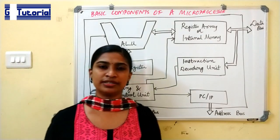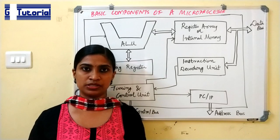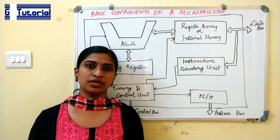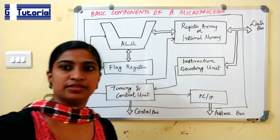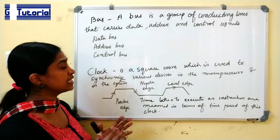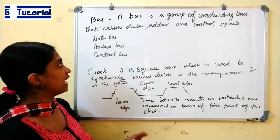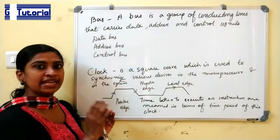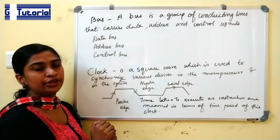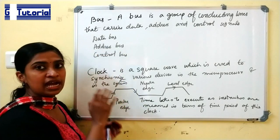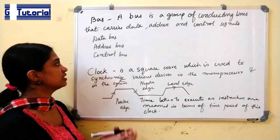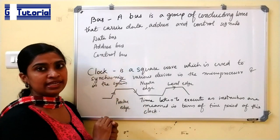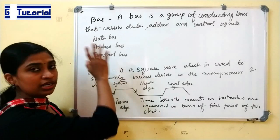Now let us see some important terms used in microprocessor study. A bus is a group of conducting lines which carries data, address, and control signals. The data bus carries data used by the ALU for operations. The address bus carries the address of instructions to be executed. The control bus carries control signals.